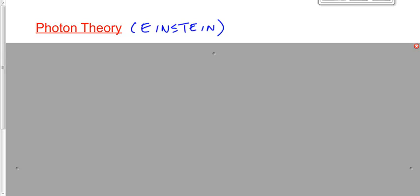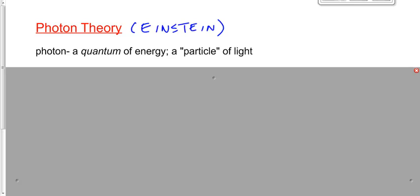Max Planck said energy is quantized. Einstein said, well, then that means that light is a particle as opposed to just a wave. We're not suggesting here that light is not a wave.